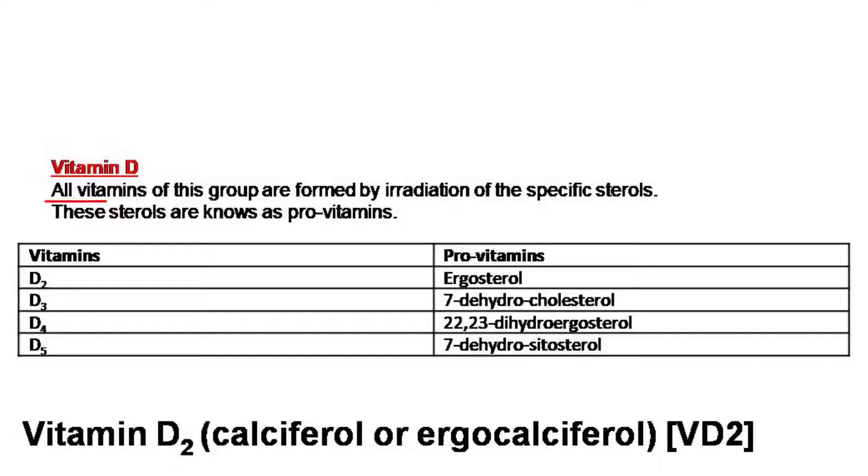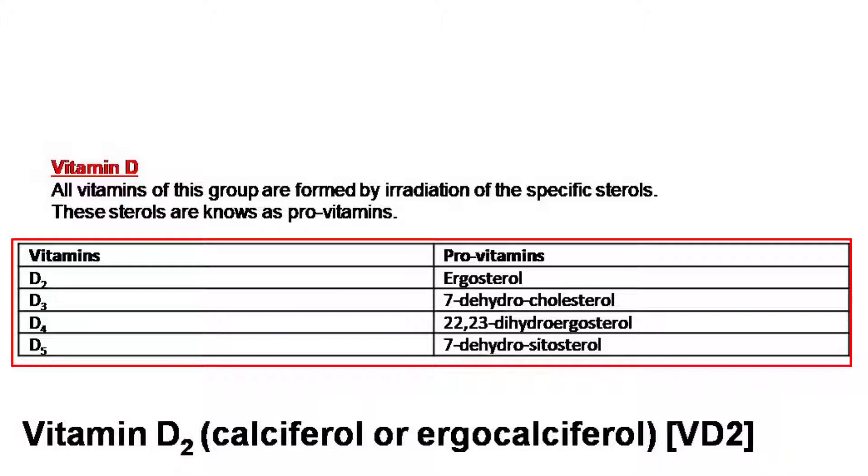Vitamin D: All vitamins of this group are formed by irradiation of specific sterols. These sterols are known as provitamins. Vitamins and their corresponding provitamins: D2 from ergosterol, D3 from 7-dehydrocholesterol, D4 from 22,23-dihydroergosterol, D5 from 7-dehydrositosterol.